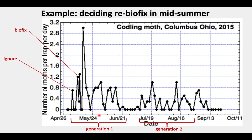Let's revisit our previous example from 2015, where we had ignored this first moth caught. We had our biofix for the first generation, and then you could see there were various ups and downs all through what we call first generation. But right near the end of June, a typical trend is the catch really falls off — very low numbers or even zeros for about two weeks. What we're looking for for second generation is an increase in the moth catch. In this case, there was one little blip that we ignored, and then the next blip we said was our re-biofix.